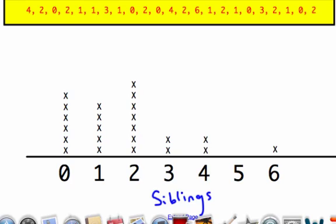And now that we have this dot plot here, there's all sorts of different information you can figure out. You can figure out the mode, for instance. The most common number here is that people have two siblings.